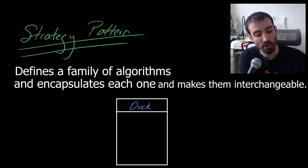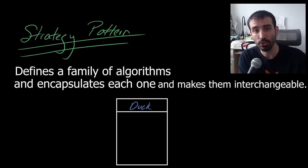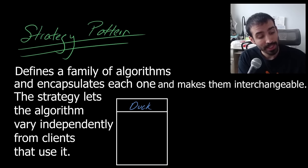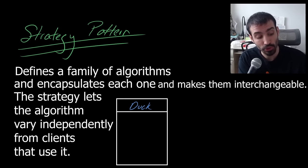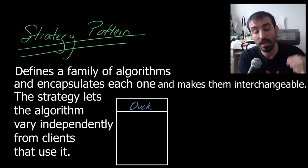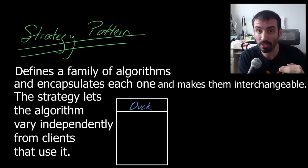So what does that mean? It defines a family of algorithms — a grouping of algorithms that all do the same kind of thing or share a theme. Encapsulates each one, meaning in OOP it wraps a class around the functionality, and makes them interchangeable — likely using an interface so you can swap out behaviors at any point in time. The strategy lets the algorithm vary independently from the clients that use it. This is really the essence of the strategy pattern.